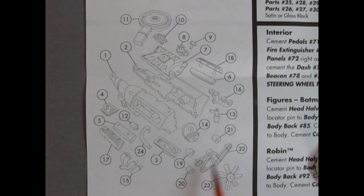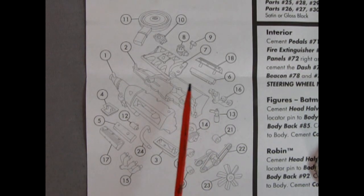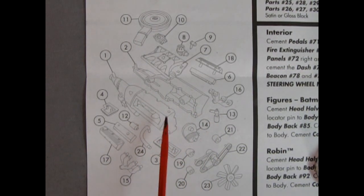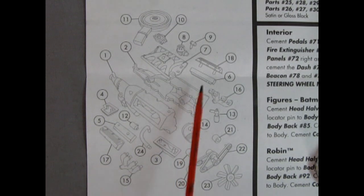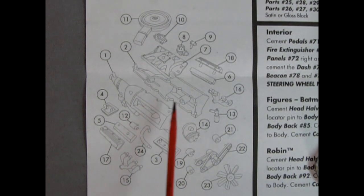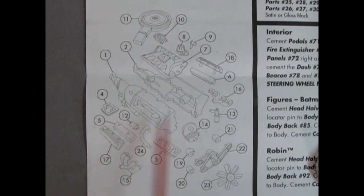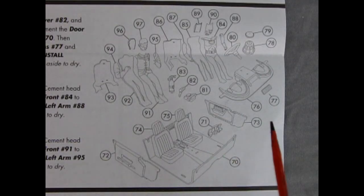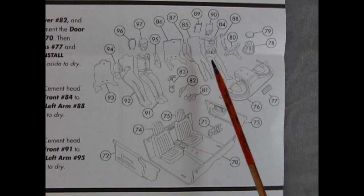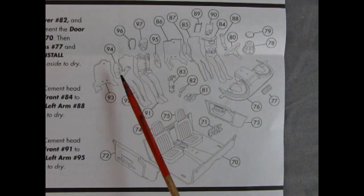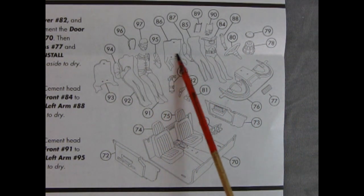And then we also have our fan down below. Now, it does say you can paint this engine any color. But what I do believe is this is a Ford motor, probably a Windsor or one of those. Or Cleveland, actually. So here I would paint it as a Ford engine blue. Next up, we have the assembly of the interior.